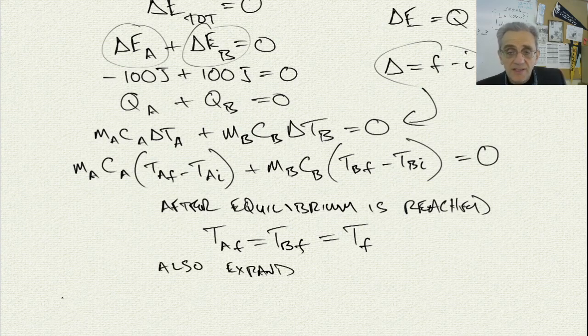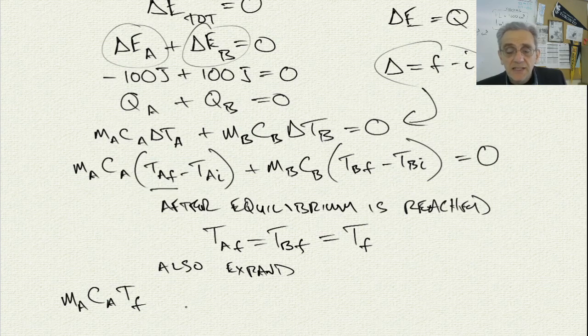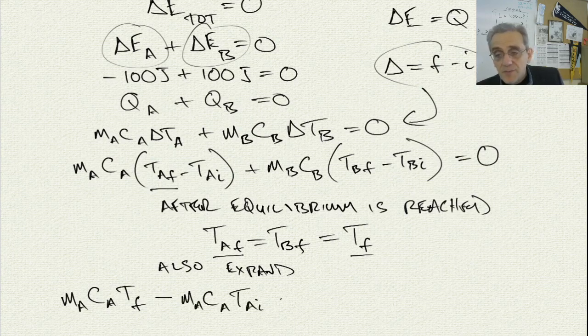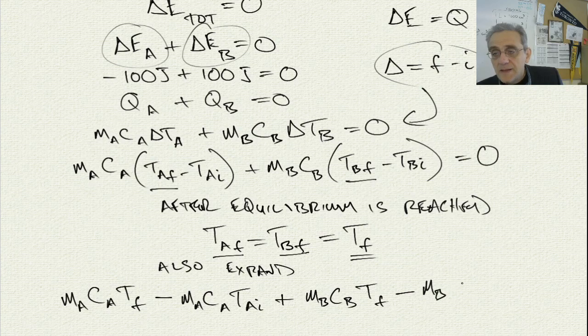I'm going to multiply. So now I'm going to say that's MACA TF instead of saying TAF. I'm going to just say TF. And now I'm going to say minus MACA TAI plus MBCB times TF, minus MBCB TBI. And all that is still equal to zero.